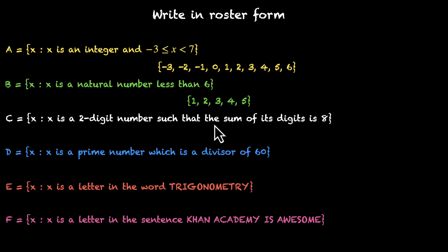X is a 2-digit number such that the sum of its digits is 8. Well, nothing directly comes to mind. So let's skip this. X is a prime number which is a divisor of 60. This might also be a lot of work. So let's do the easy ones. This is how I used to give exams. Always solve the easier ones first.